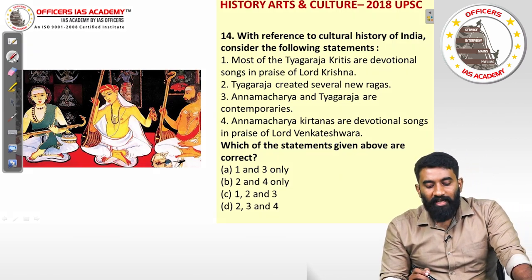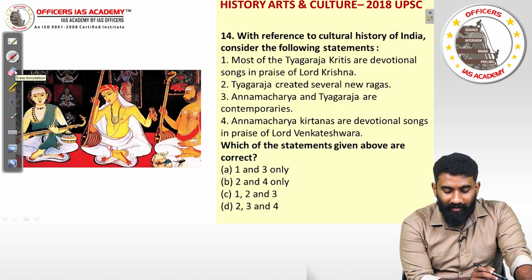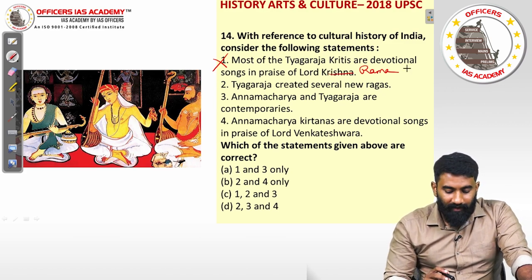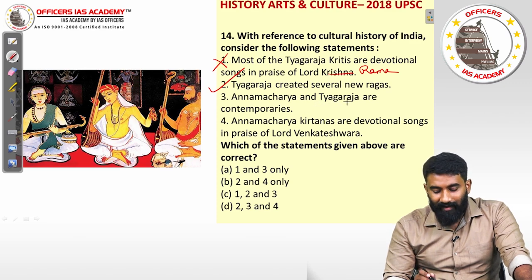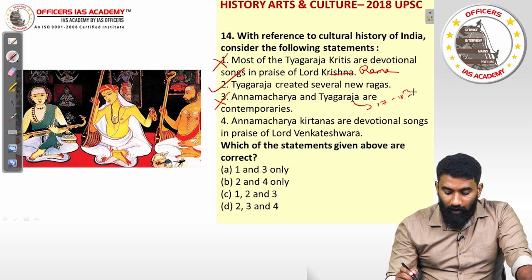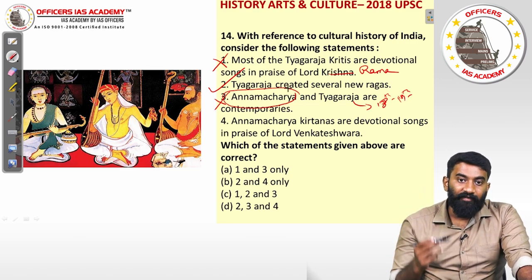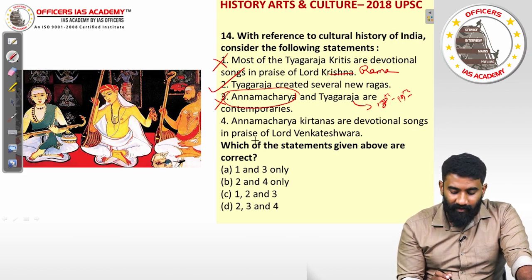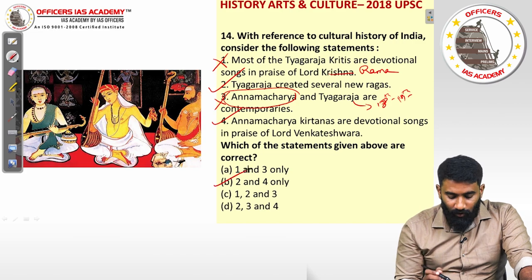Question fourteen: most of Tyagaraja's kirtanas are devotional songs in praise of Lord Krishna — wrong, they are in praise of Lord Rama. Tyagaraja created several new ragas — correct. Annamacharya and Tyagaraja are contemporaries — wrong; Tyagaraja was from the 18th–19th century while Annamacharya was from the 12th–13th century. Annamacharya's kirtanas are devotional songs in praise of Lord Venkateswara — correct. So statements two and four are correct — the answer is option B.